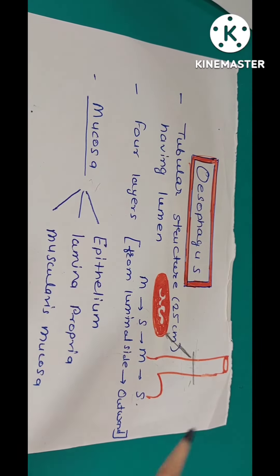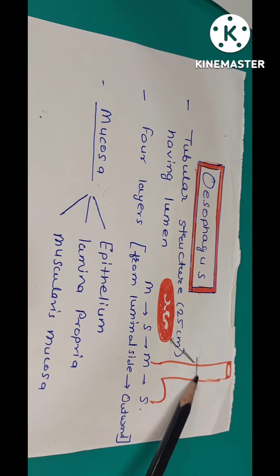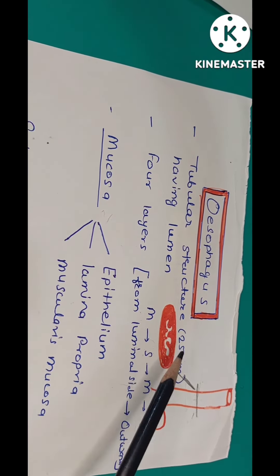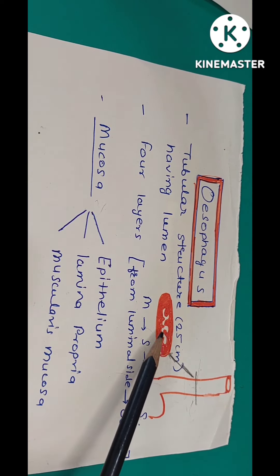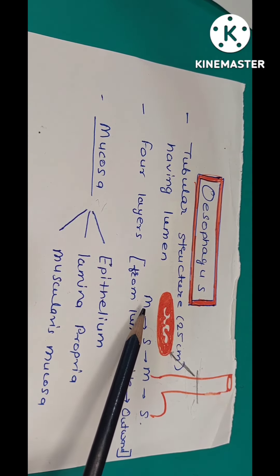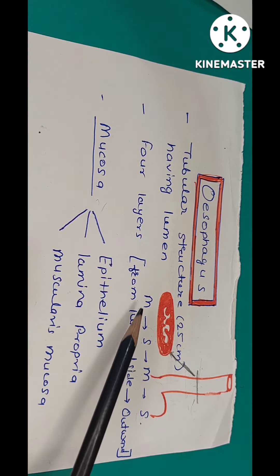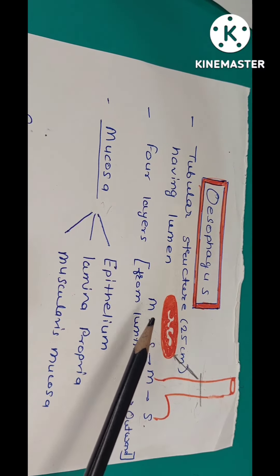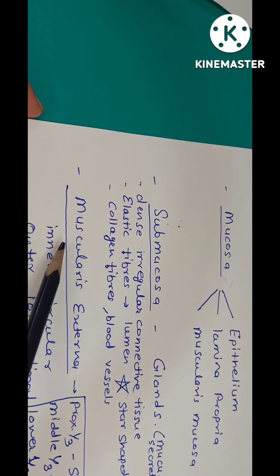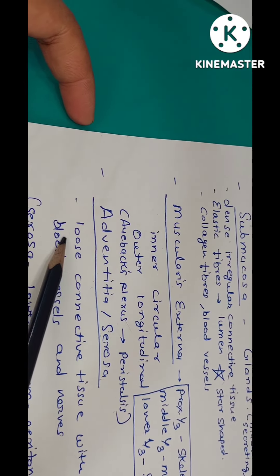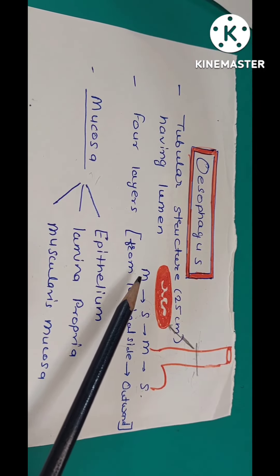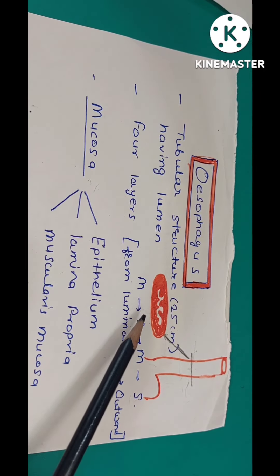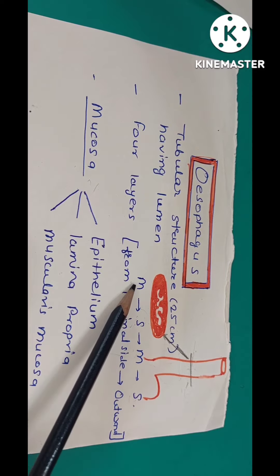Let's see how to draw a schematic histology diagram of the esophagus. When we take a cross section of the esophagus, you will see the lumen. From the luminal side outward, histologically the esophagus shows four layers: mucosa, submucosa, muscularis externa, and adventitia or serosa. You can remember these as MSMS from inside out.